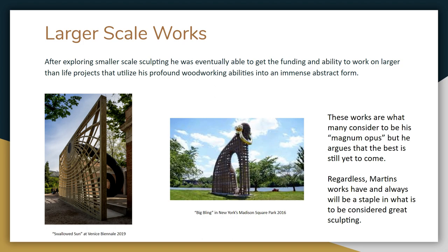After exploring smaller scale sculpting, he was eventually able to get the funding and ability to work on larger-than-life projects that utilize profound woodworking abilities in an immense abstract form. He has been exploring and perfecting large-scale sculptures since the early 1990s. The one on the left, Swallowed Sun, is shown in Venice — the Venice Millennial — and was built in 2019. On the right is my personal favorite, The Big Bling, made in 2016 in New York's Madison Square Park. These works show his smaller works on a much bigger and grander level, but still with the same idea and feeling portrayed. These works are what many consider to be his magnum opus, but he argues that the best is still yet to come.